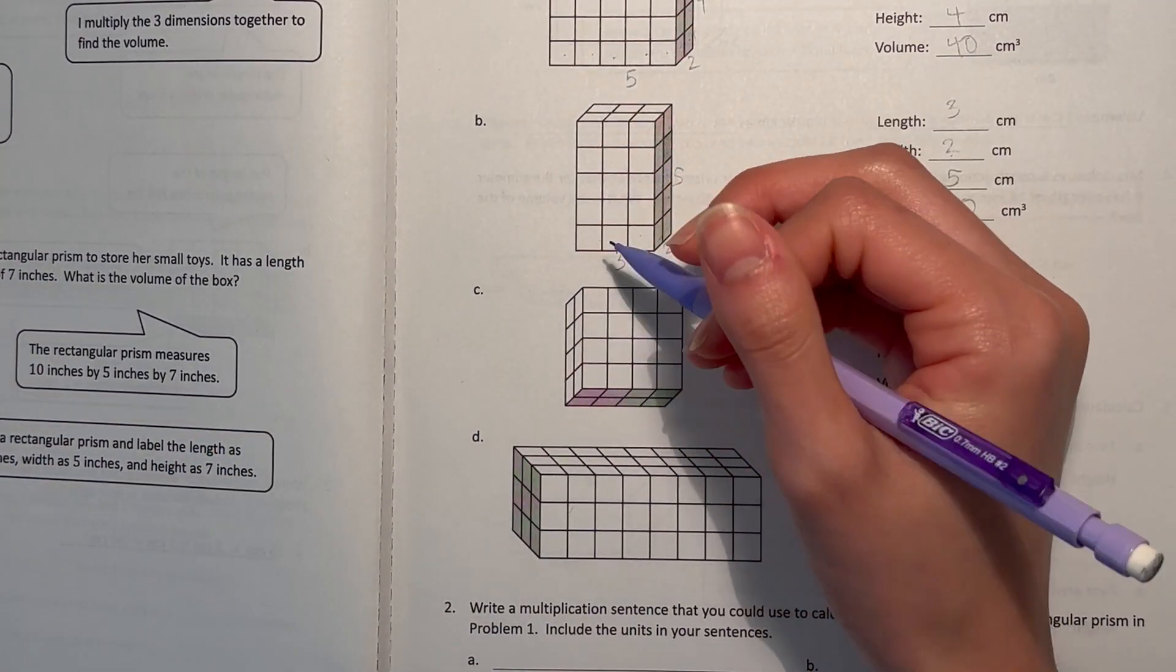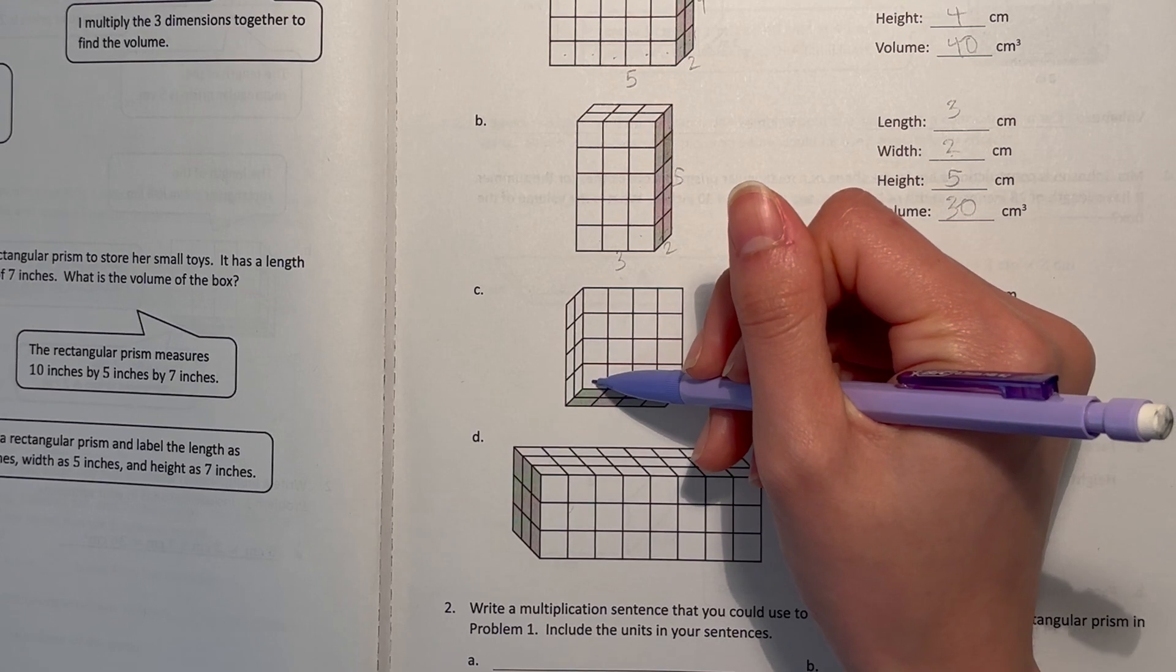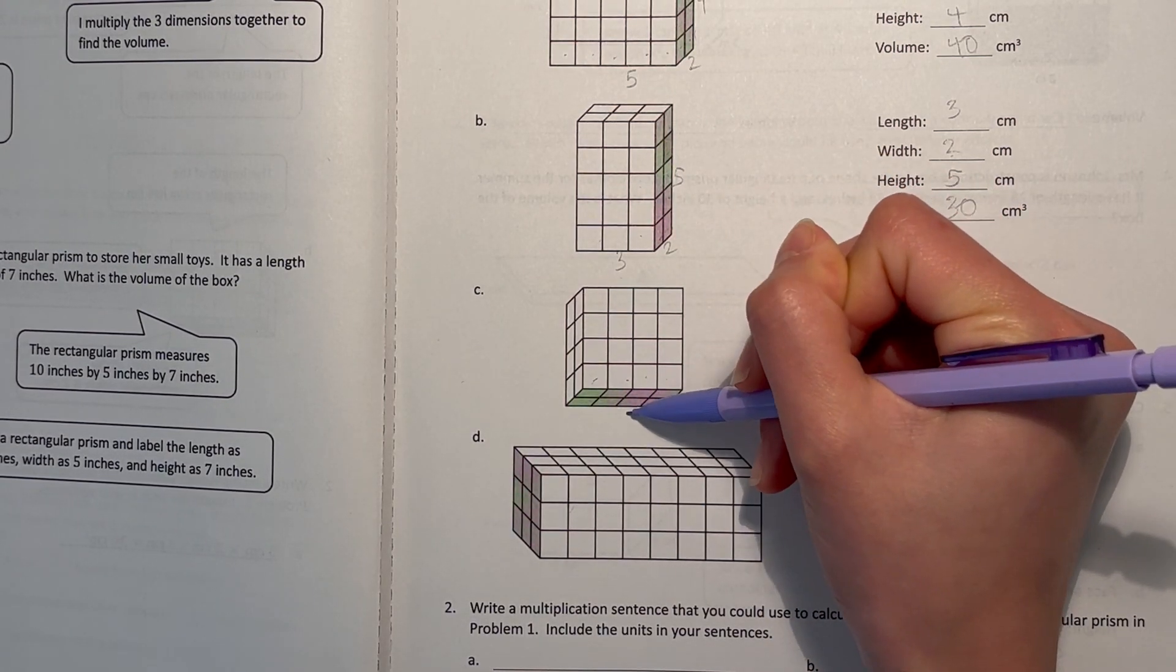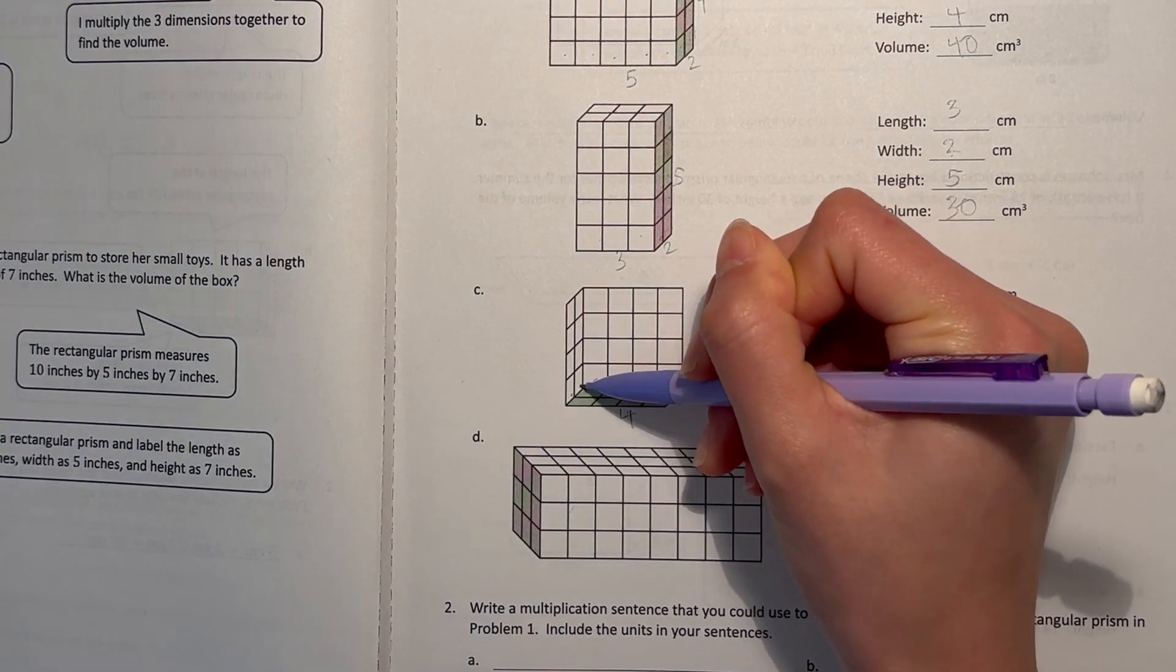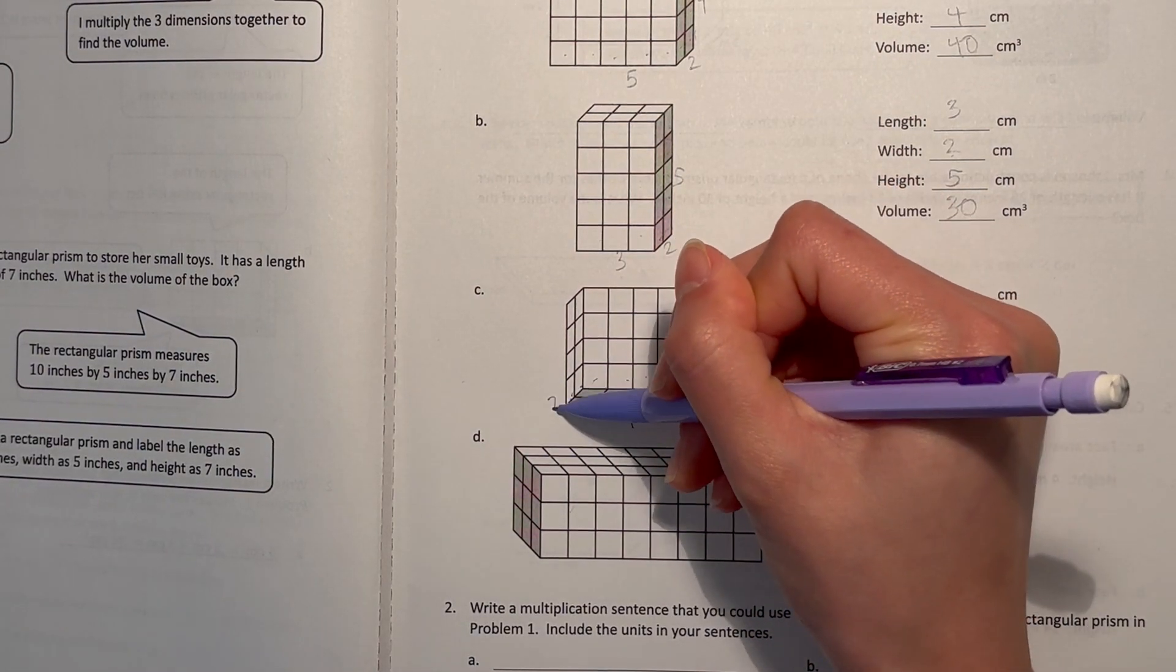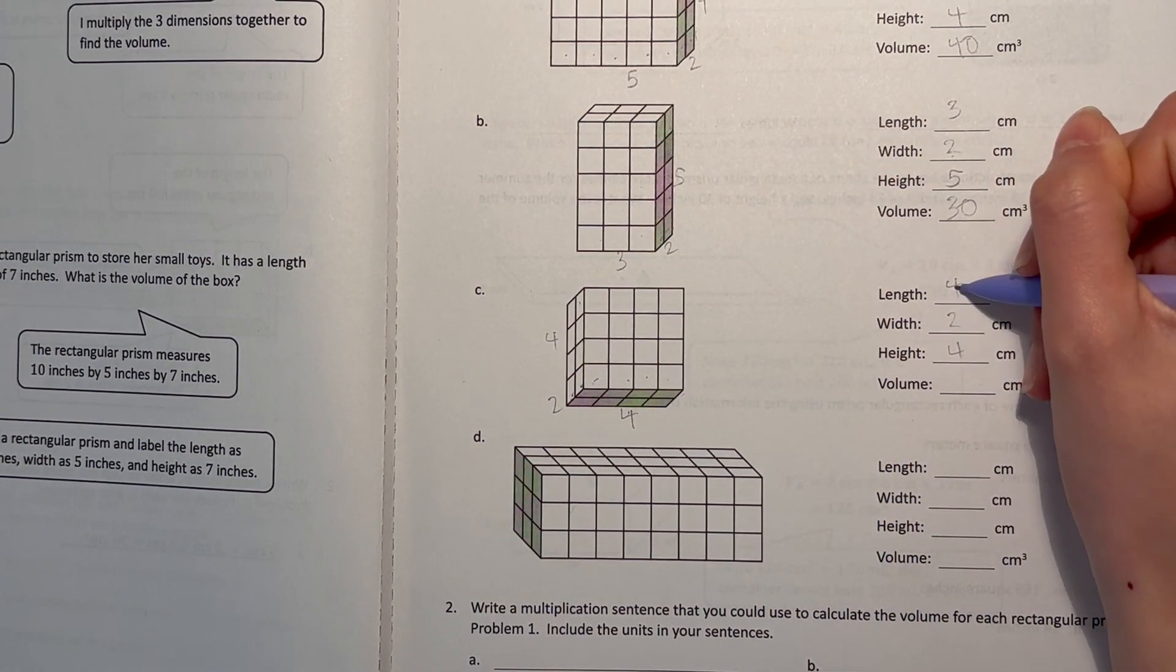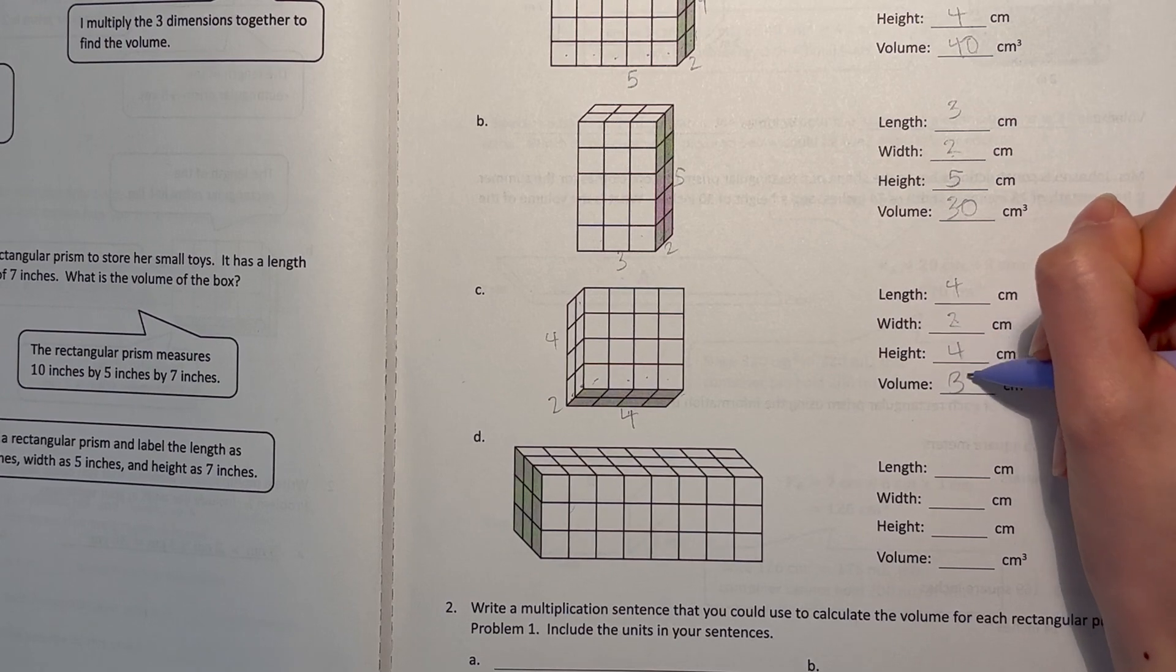Now C, they're trying to trick you a little bit but don't be tricked. This is still the width, that's four. Over here, I mean the length, width is two and height is also four. Four times two, eight times two times four is 32.